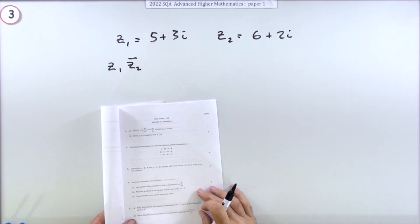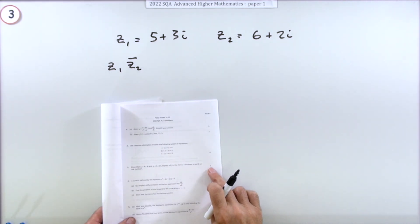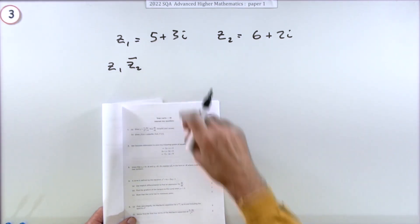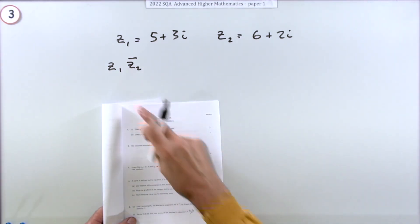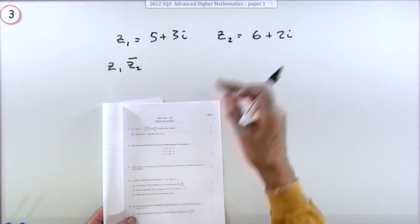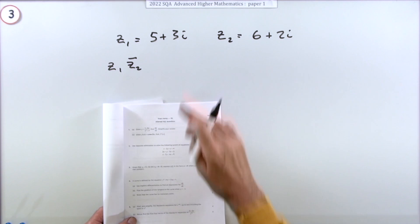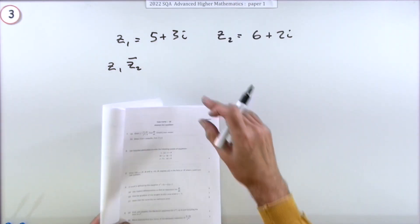So question three then from the 2022 advanced diet complex numbers. It's just a little two mark question and it's a very straightforward simple little one. Look at it. You're given two complex numbers in that rectangular form there. You're asked to find this product again in the rectangular form, so write it in the form a plus ib, even though that goes a plus bi, no matter.